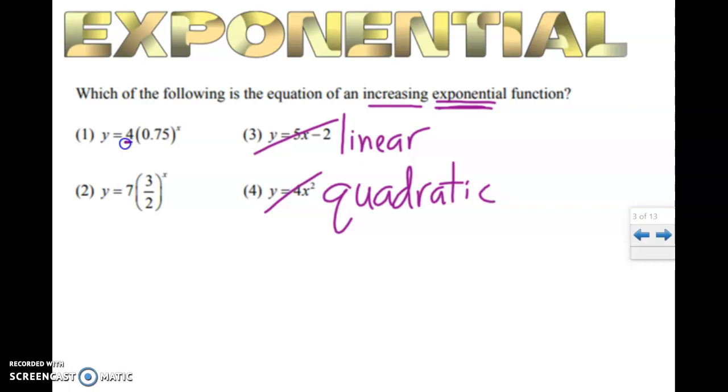Well, don't look at the y-intercept. Look at the number in the parentheses. And for it to be increasing, we said it's got to be greater than one. So multiply by something bigger than one increases it. 75 cents is going to decrease it. So it's got to be three out of two, which is 1.5, right? This is the same as one and a half bigger than one. That's an increaser.